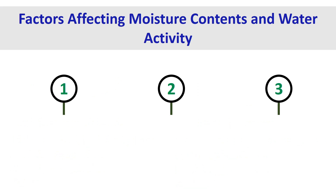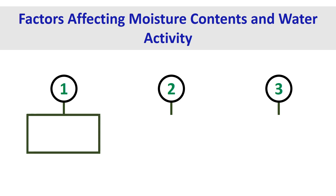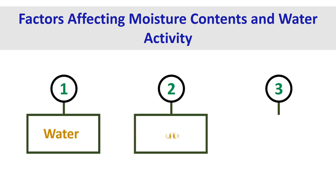From all the examples in the earlier slides, we could observe that both solutes and water affect the water activity. Generally, three major components affect the water activity of foods: water, solutes, and ice.